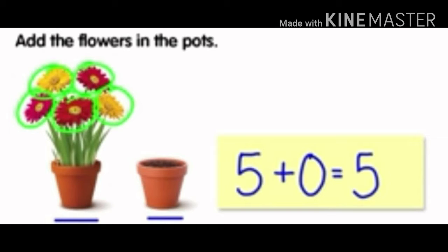Look here. Add the flowers in the pot. Look at the first pot — look how many flowers are there. One, two, three, four, five. Five flowers. And look at the next pot. There are no flowers. That is why five plus zero is equal to five.